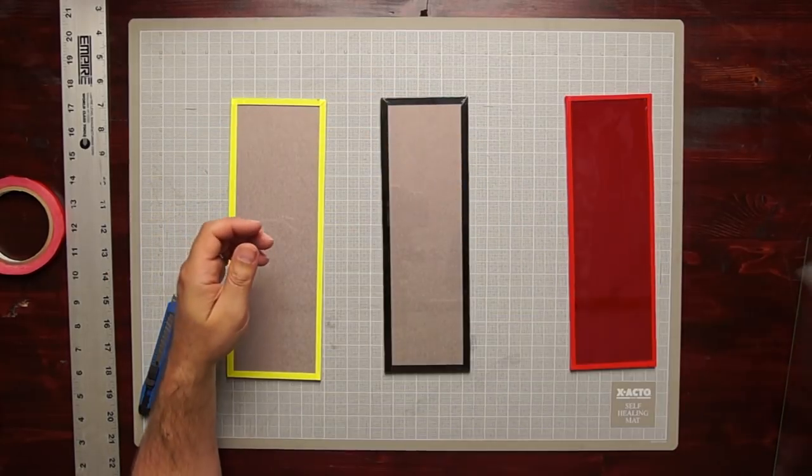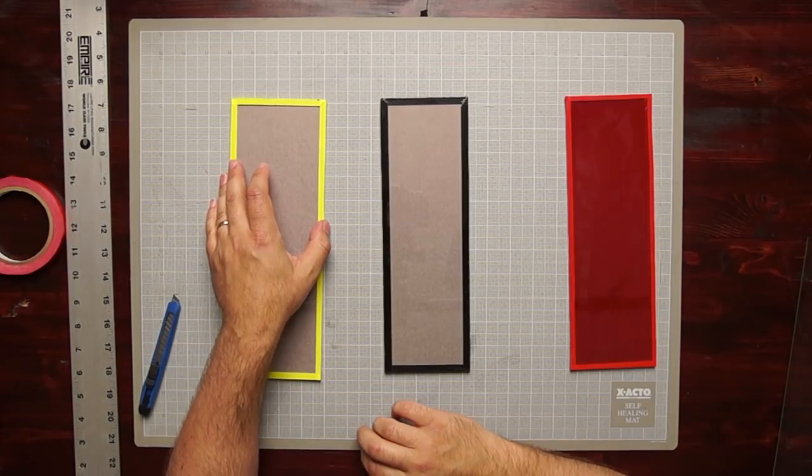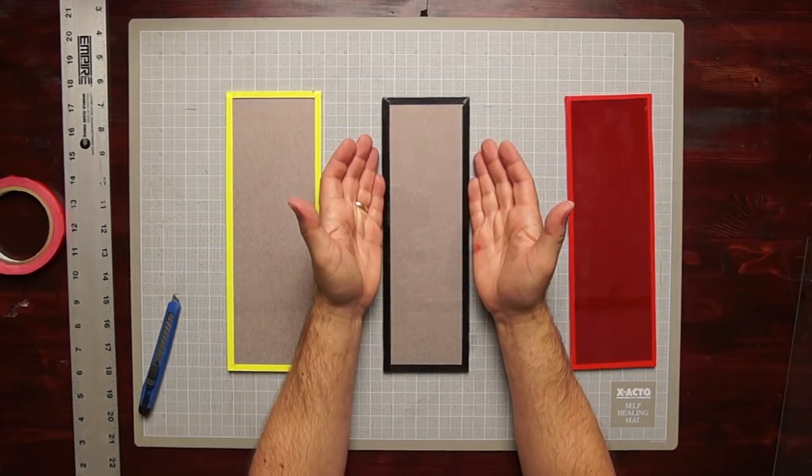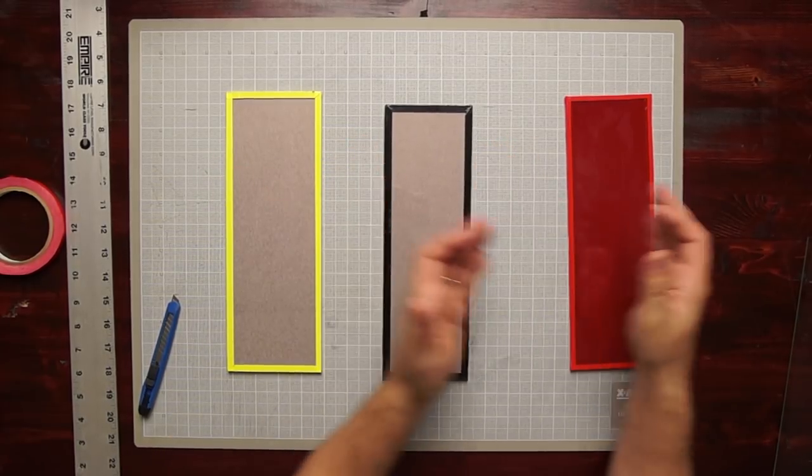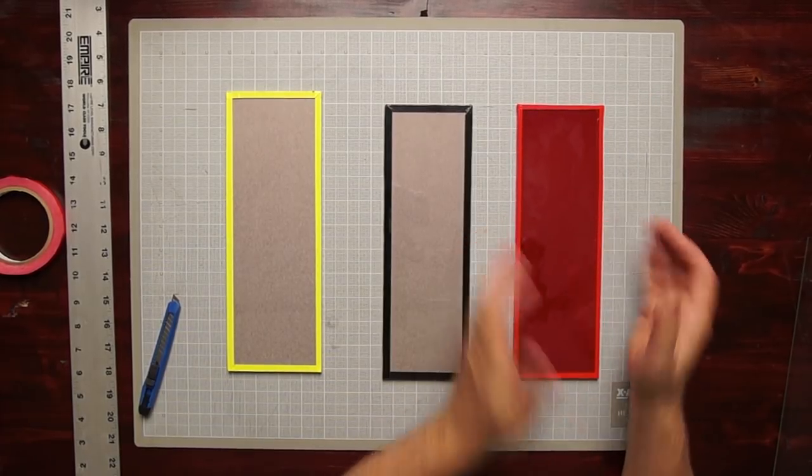The yellow filter goes in for all applications—color material, black and white ortho. Black filter for color printing material, red for orthochromatic black and white.